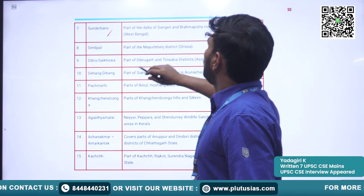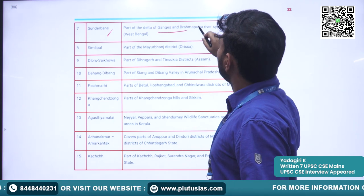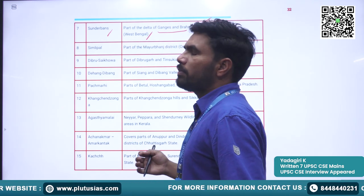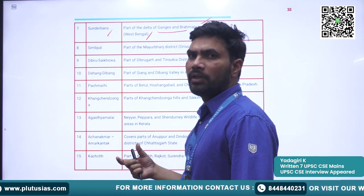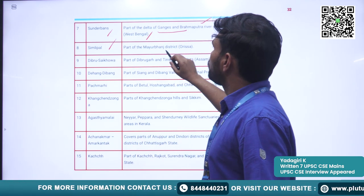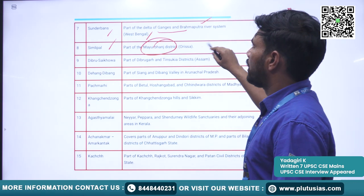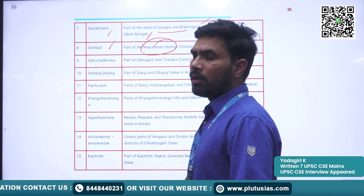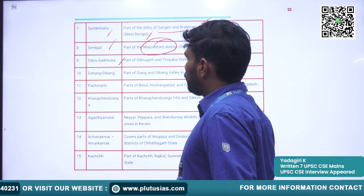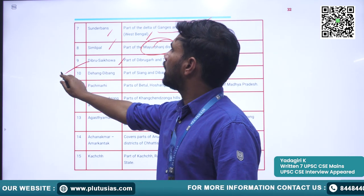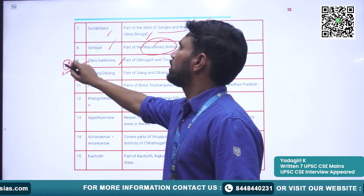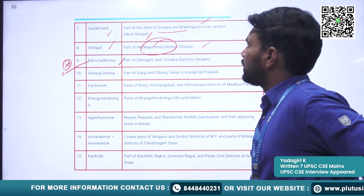Next is Sundarbans — parts of the delta of the Ganga and Brahmaputra river system, located in West Bengal and some parts of Bangladesh. Next is Simlipal — parts of Mayurbhanj district designated as Simlipal Biosphere Reserve. Next is Deobari-Saikhoa, which is not under UNESCO protection.